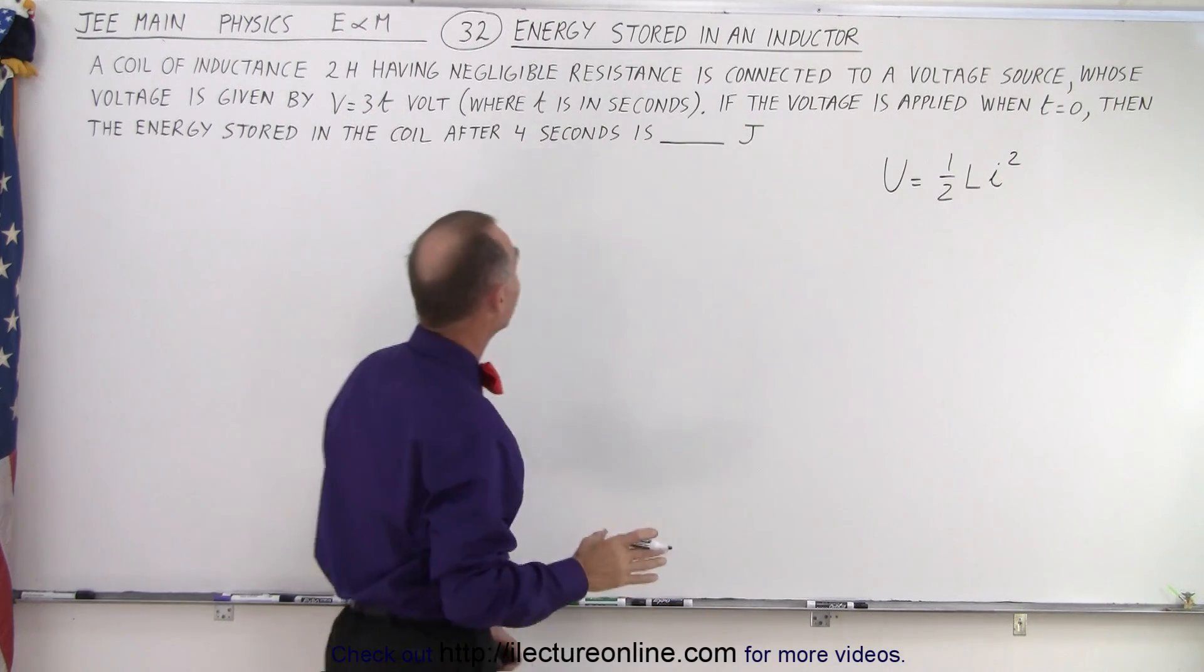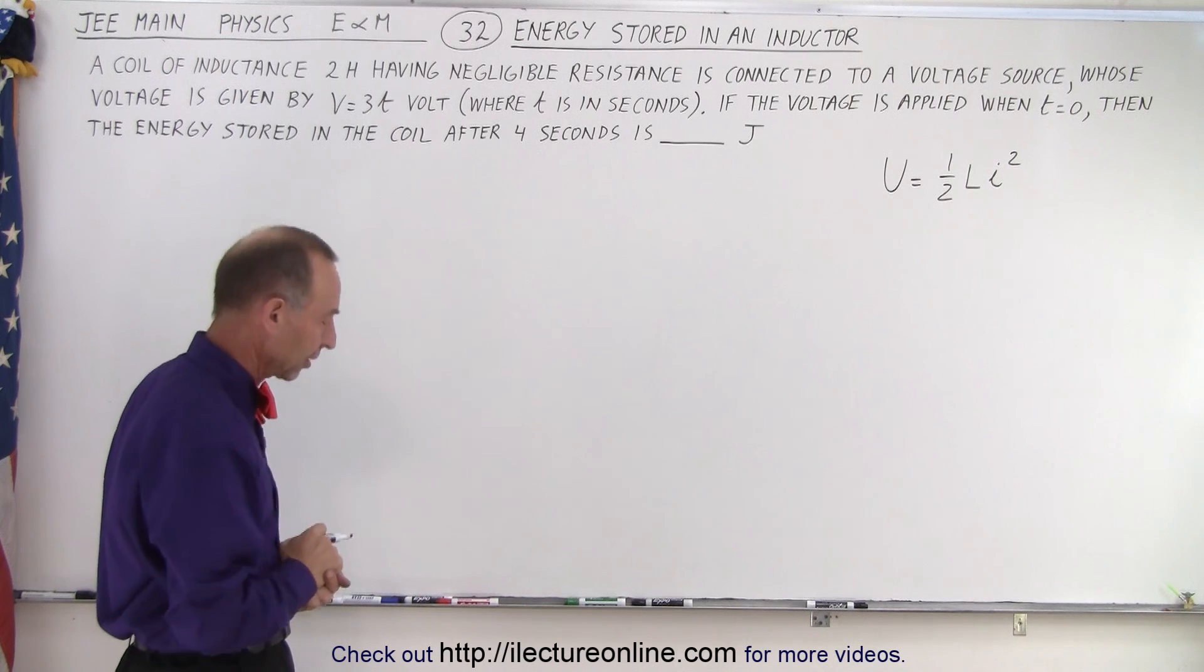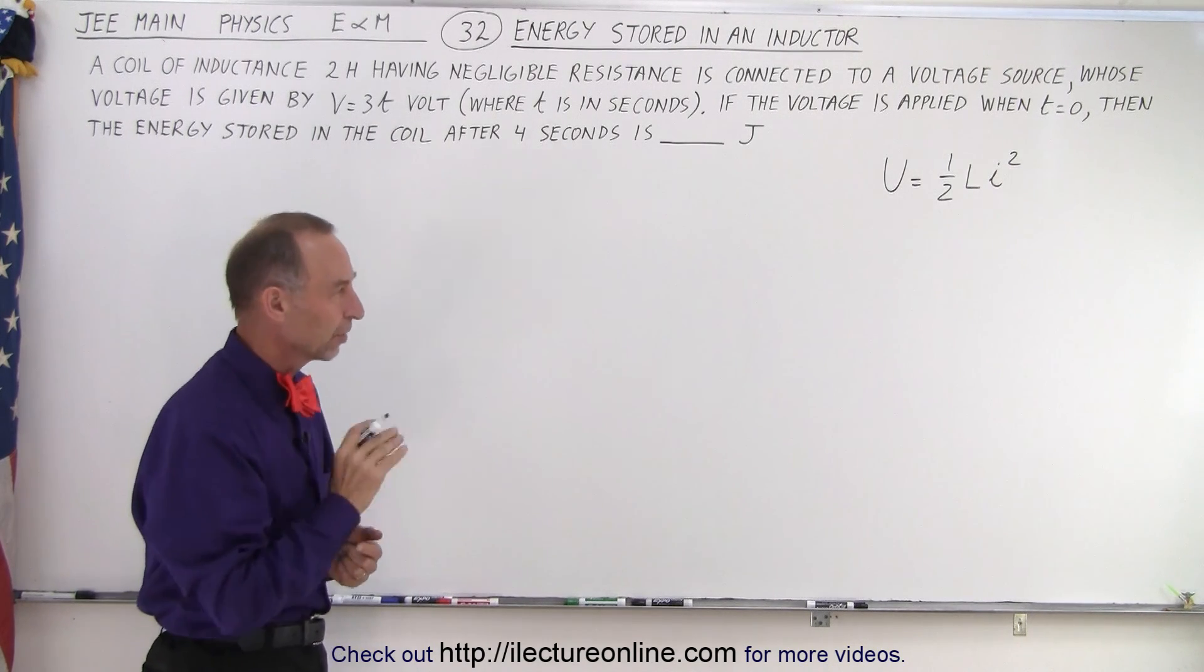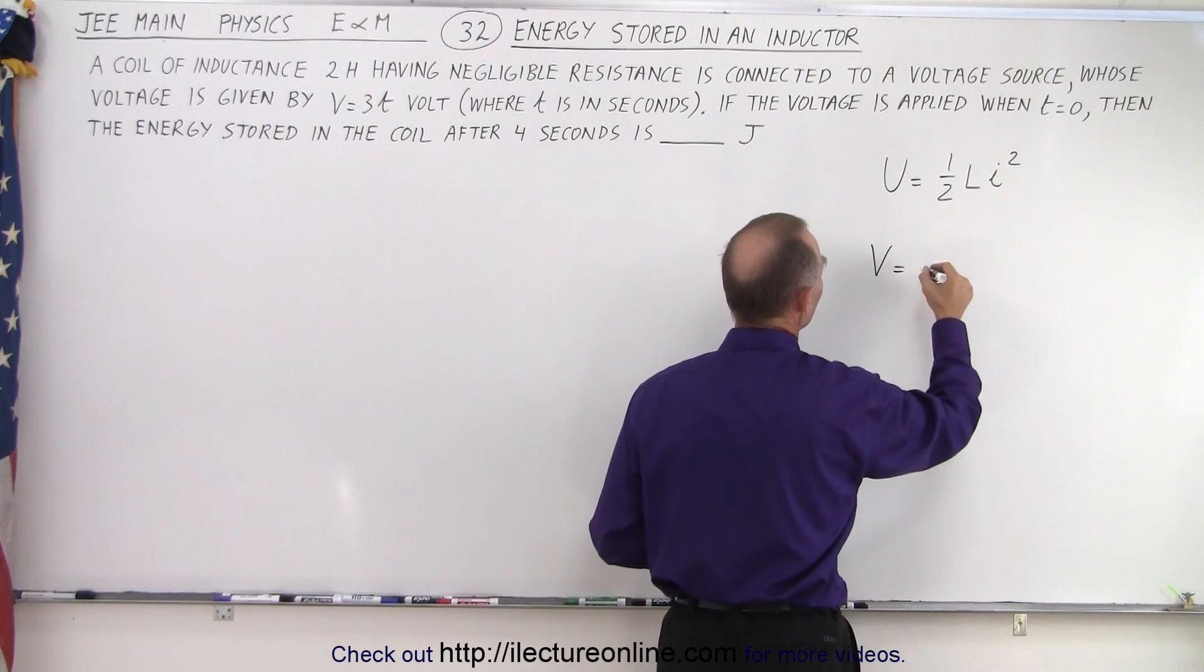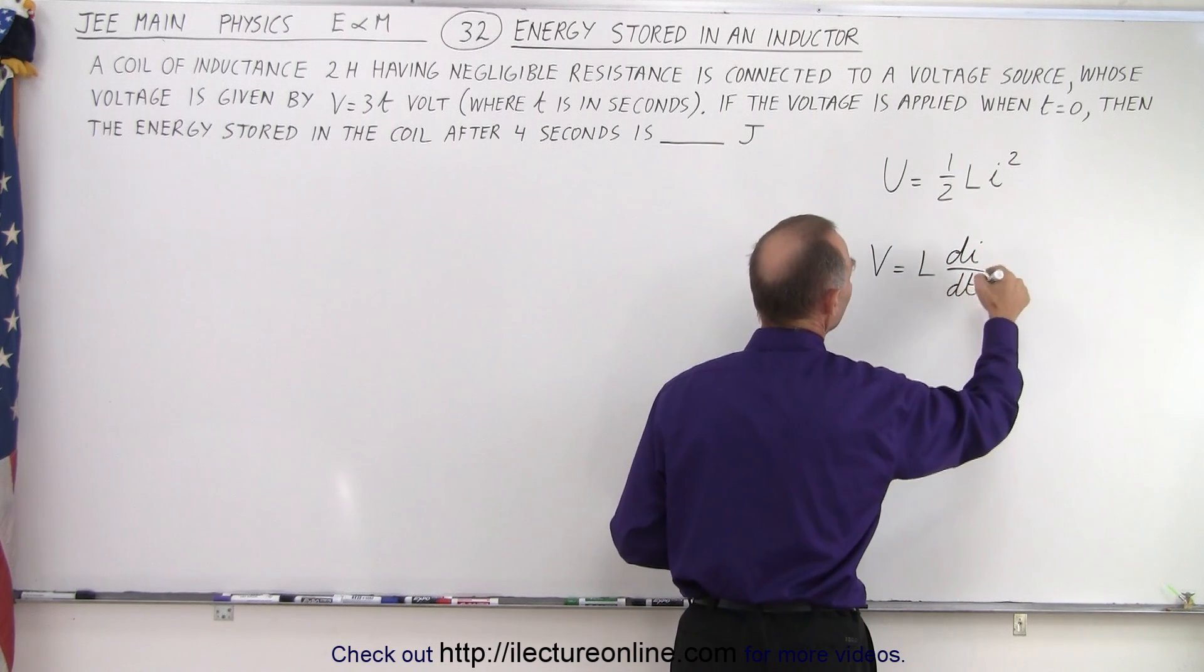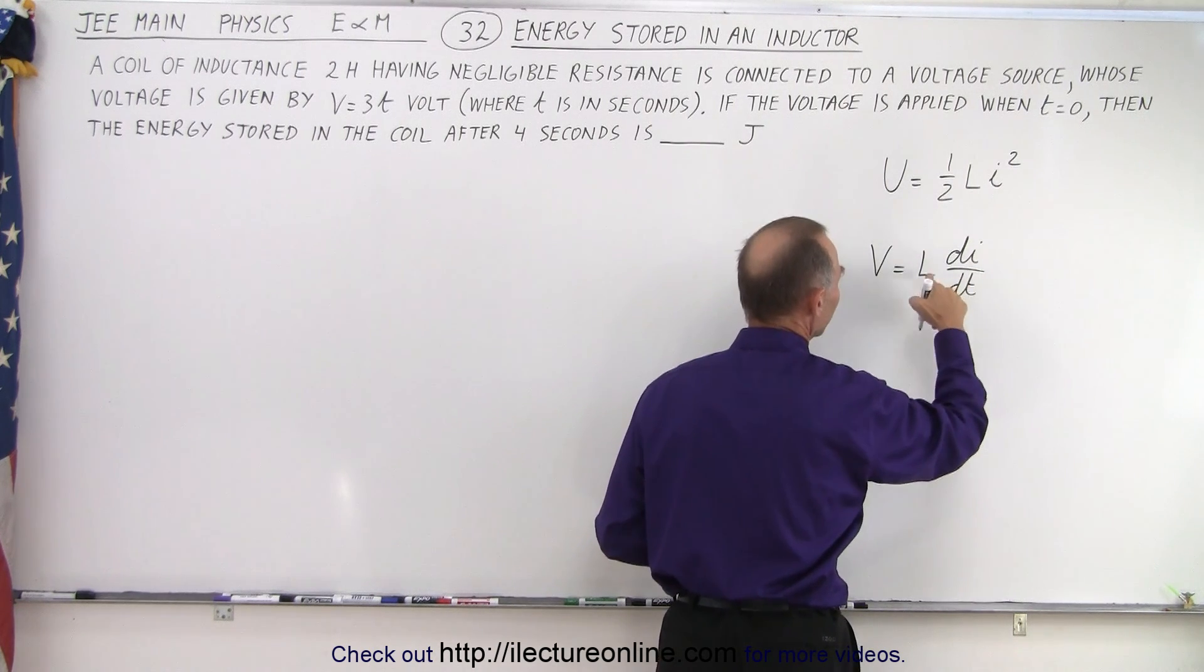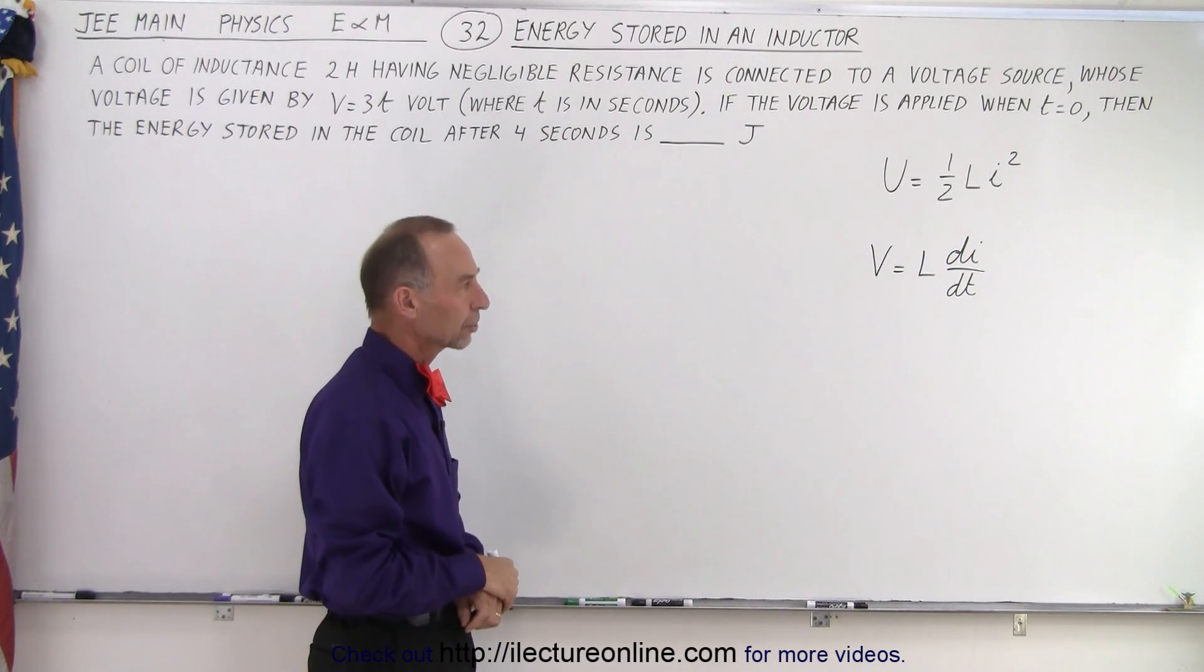So we're given the inductance, we don't know the current. We're supposed to know the current after four seconds. So then we need to know a second equation. The second equation is that the voltage across an inductor is equal to L times dI/dt. The rate of change of the current with respect to time multiplied times inductance gives us the voltage across the inductor.